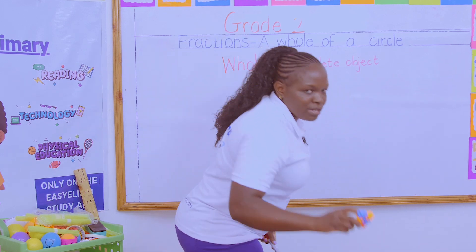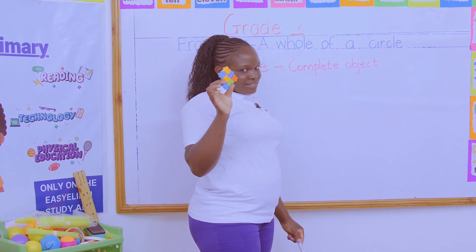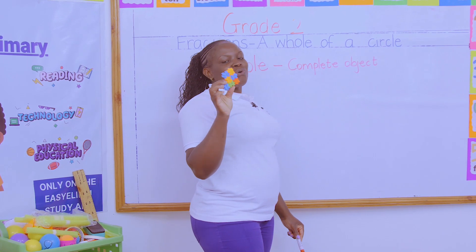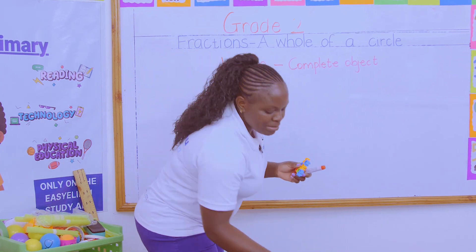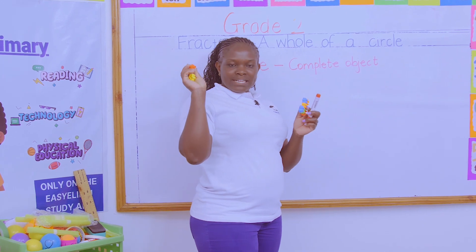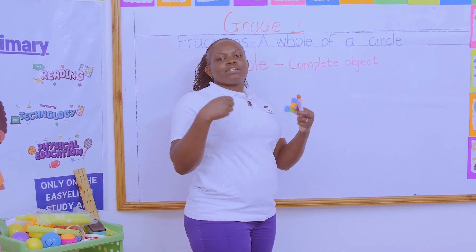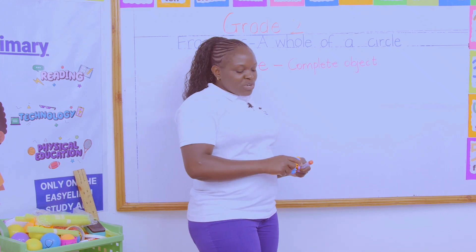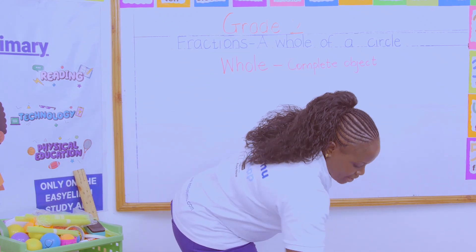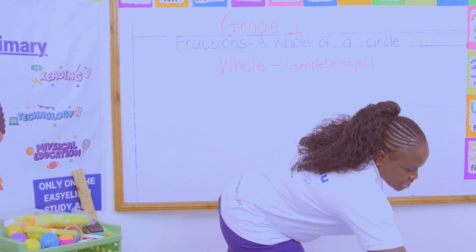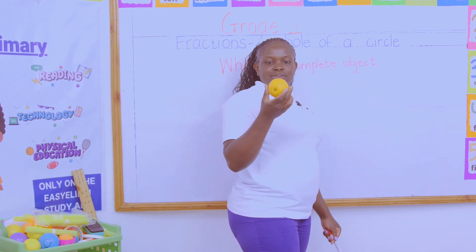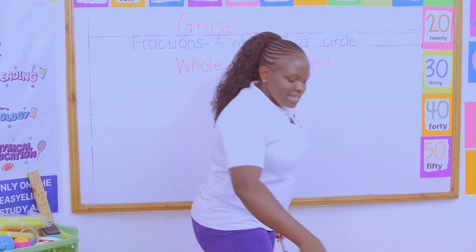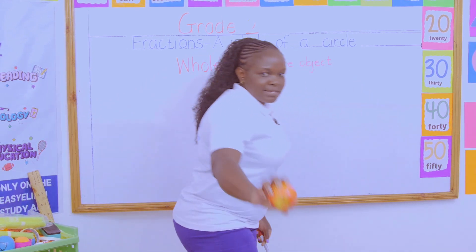Can I say this puzzle is a whole? No. Why? It has some missing parts. It's until I put the missing parts that it becomes a whole. But as for now, it is not a whole — it is not a complete thing. Can I say this orange is a whole? Yes. Why? It does not have any missing part. Can I say this apple is a whole? Yes. Why? It does not have any missing part.